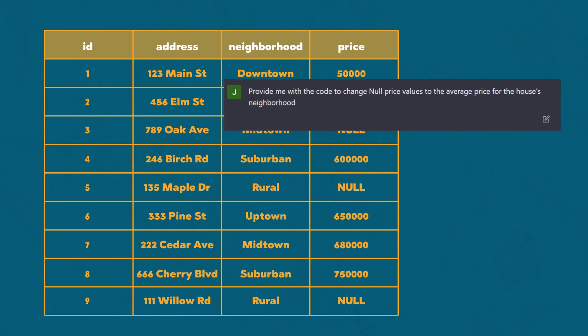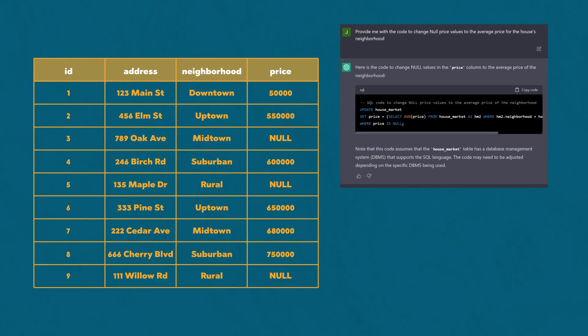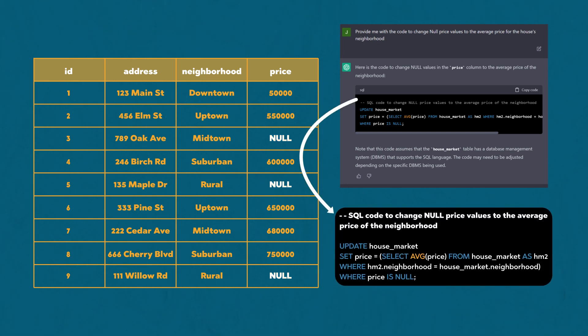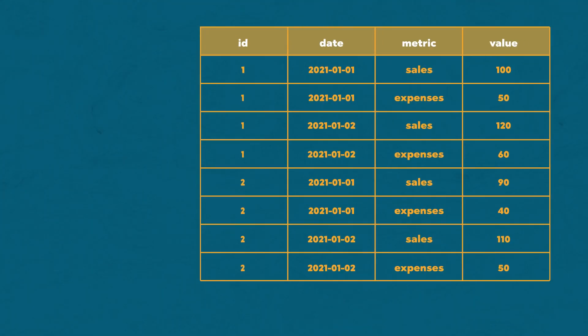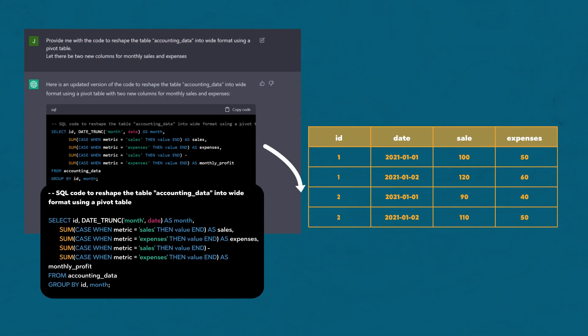For example, if you have to clean a dataset with a bunch of missing values, you can write a ChatGPT prompt for specific tasks — like cleaning values over a specific threshold, or creating a function that imputes missing variables based on the average. I've also been using ChatGPT a lot to take data from a long format and turn it into a wide format so I can use it for data visualizations. This is something incredibly boring and tedious in SQL that ChatGPT can now do for you in a single prompt.